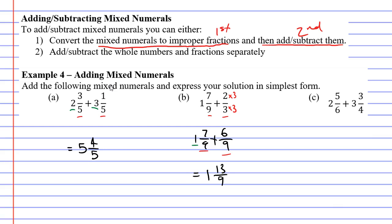You'll notice we have an improper fraction, and you should never write a mixed numeral with an improper fraction — it is not allowed. We need to convert thirteen over nine to a mixed numeral. Nine fits into thirteen once with a remainder of four, and the denominator stays as nine, giving us one and four-ninths. We bring down the whole number one and add it to the other whole number one. One plus one is two, so our final answer for question B is two and four-ninths.